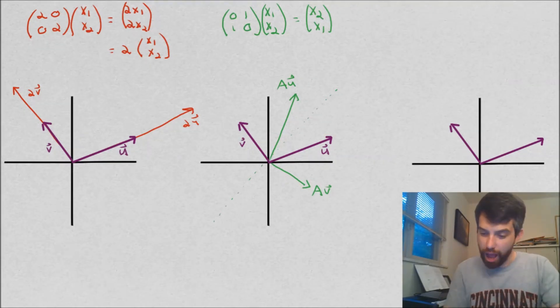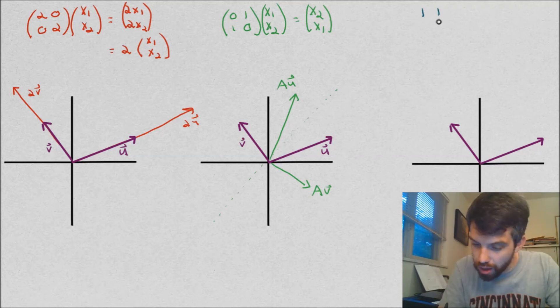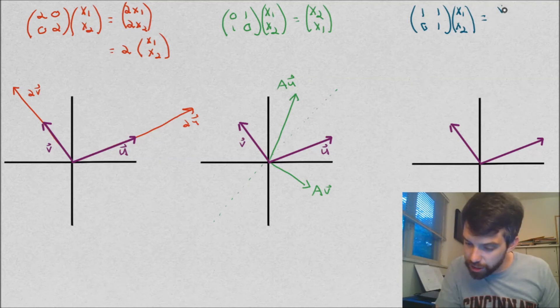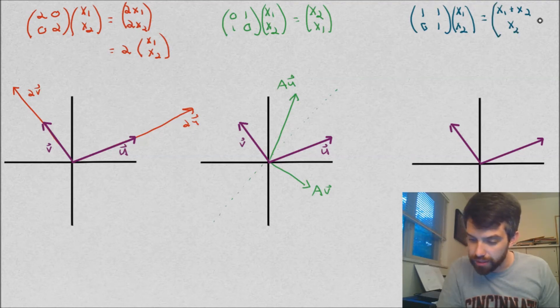Alright, final one. I'm going to look at this matrix [1, 1, 0, 1] and I'm going to apply that to the pair (x1, x2). And if I do my multiplication, x1 plus x2, and 0 and then x2. So it goes like x2 like this.